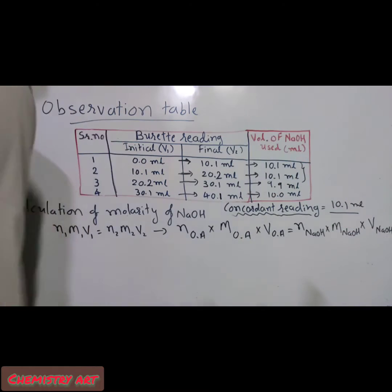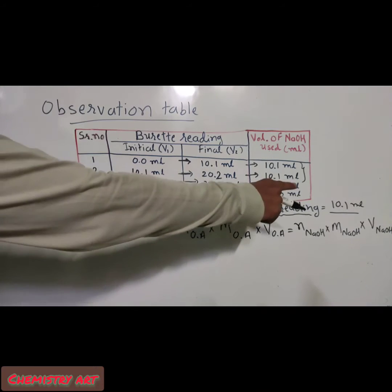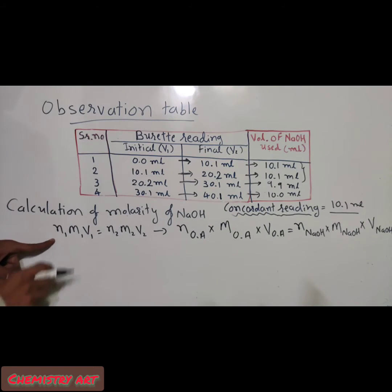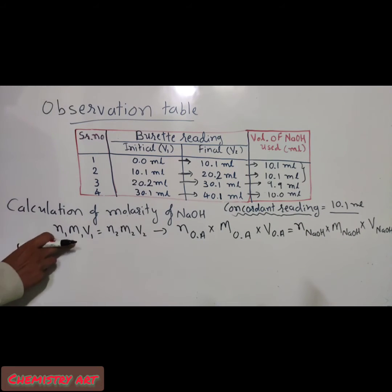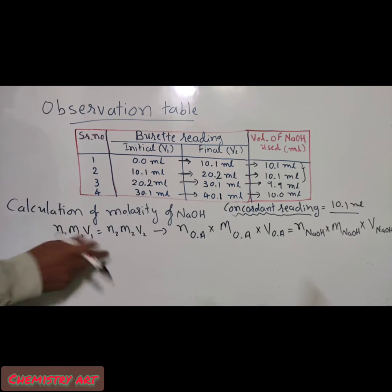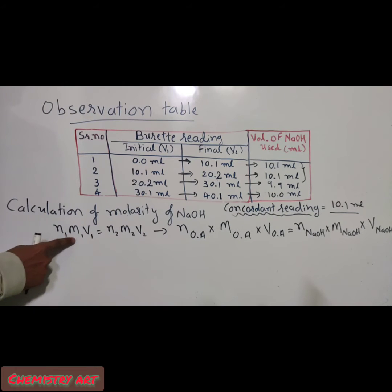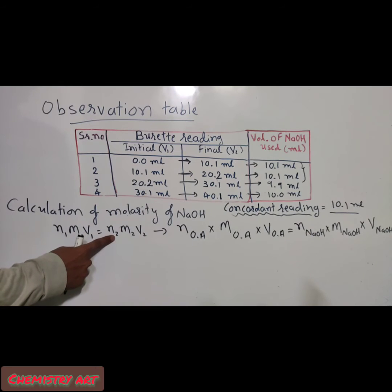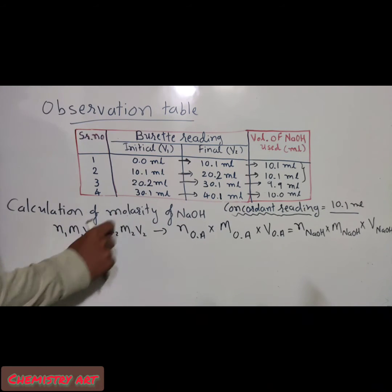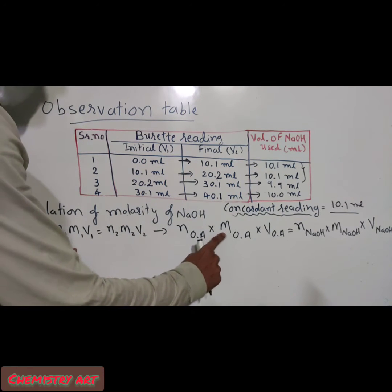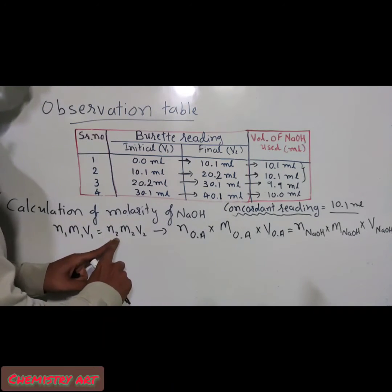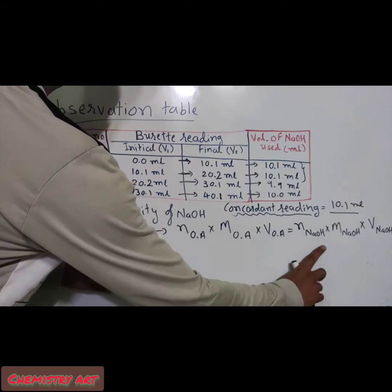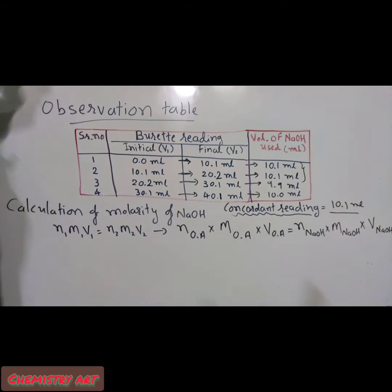So 10.1 ml of NaOH is used and we take this in the calculation. The formula is: N₁M₁V₁ = N₂M₂V₂, where N is the n-factor, M is molarity, and V is volume. We take subscript 1 for oxalic acid and subscript 2 for NaOH. N₂ is the n-factor of NaOH, M₂ is the molarity of NaOH, and V₂ is the volume of NaOH.